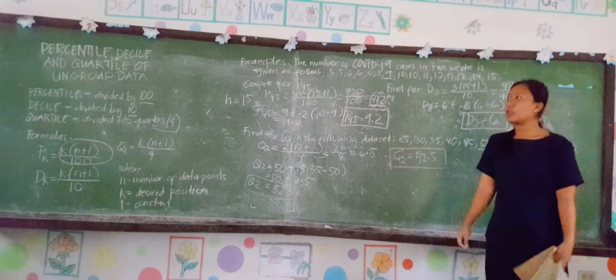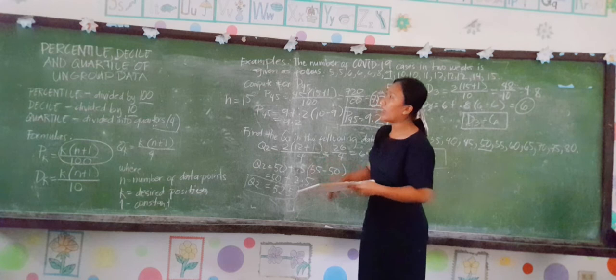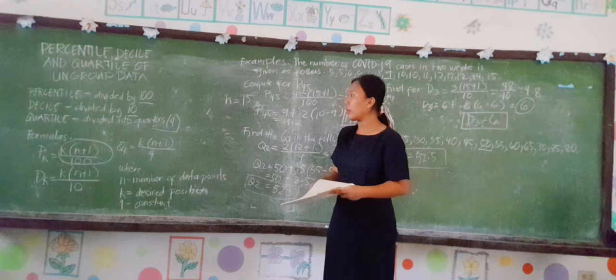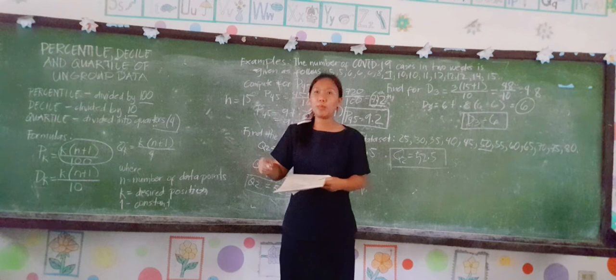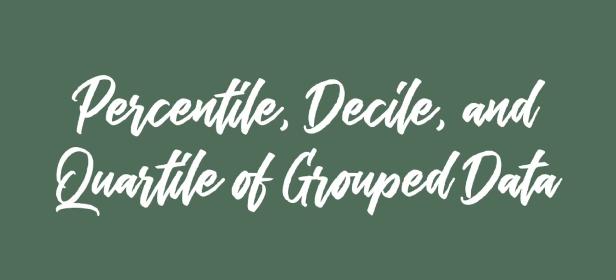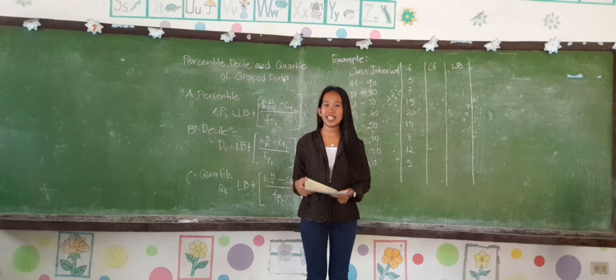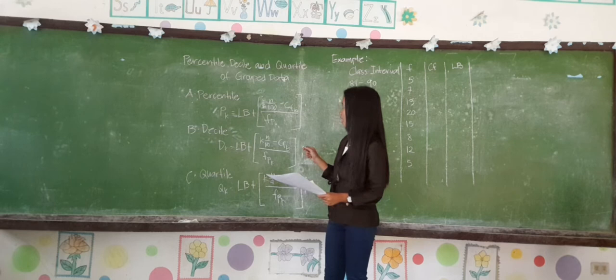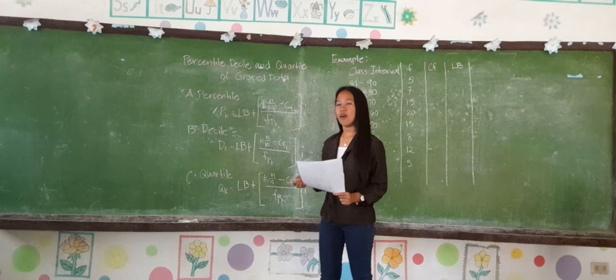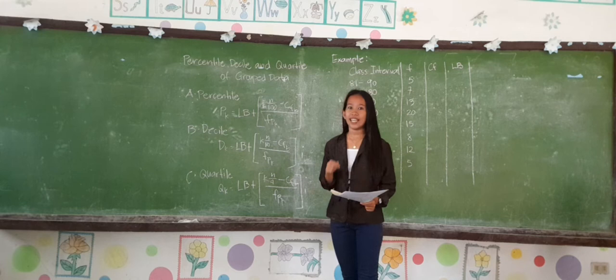So that is the percentile, decile, and quartile of ungrouped data. You just have to get familiarized with the formula so you will be able to solve the given data sets easily. Since we have finished discussing the formula for ungrouped data, we will now be discussing the formula in finding the percentile, decile, and quartile of grouped data.